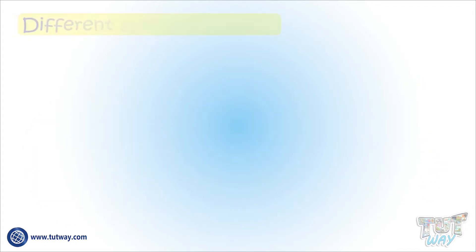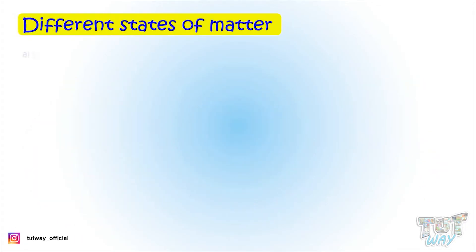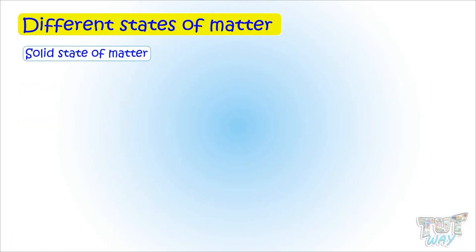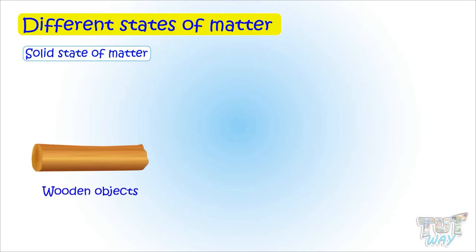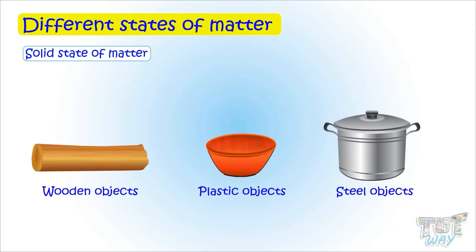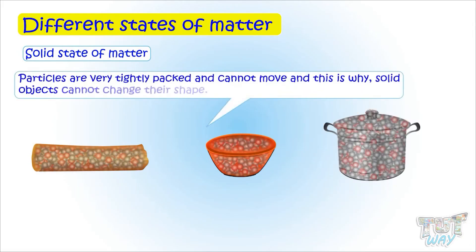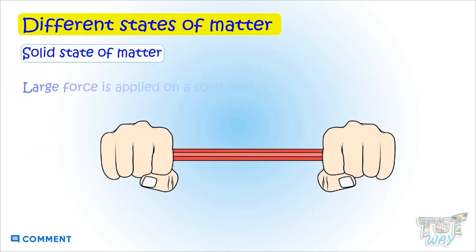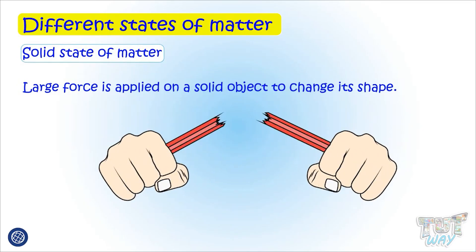Now we will learn about the different states of matter: solid, liquid, and gas. First, let's learn about the solid state of matter. Matter that is in a solid state — like wooden objects, plastic objects, and steel objects — the particles are very tightly packed and cannot move at all. And so solid objects cannot change shape and remain in the same shape unless a large force is applied on them to make them change shape.